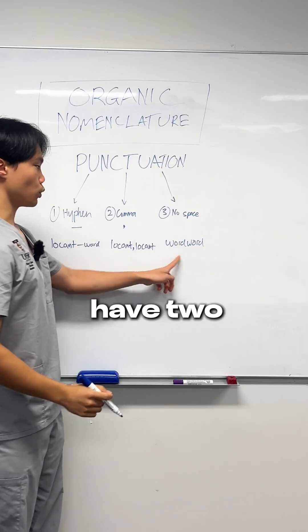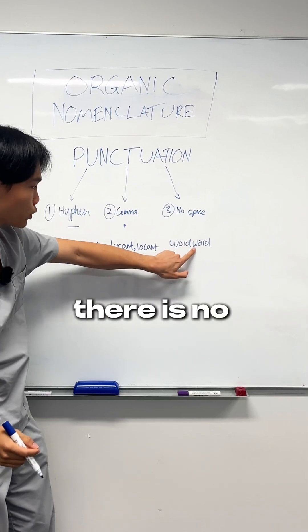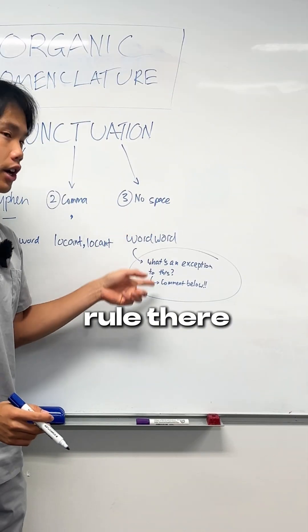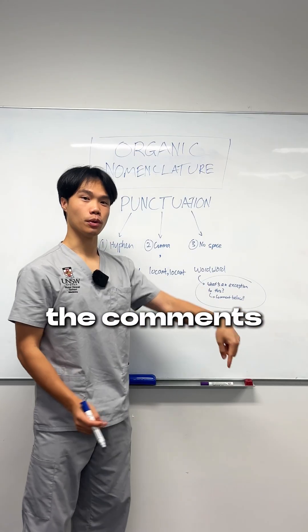And rule number three: when you have two words adjacent to each other, there is no space between them. For this third rule, there are exceptions, so if you can think of any, chuck them in the comments down below.